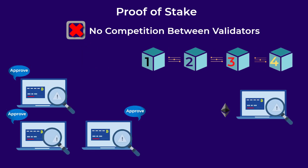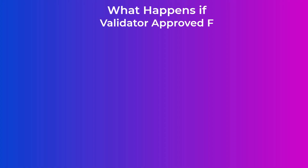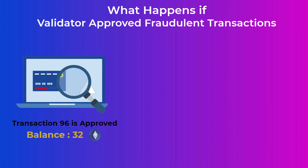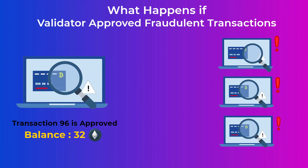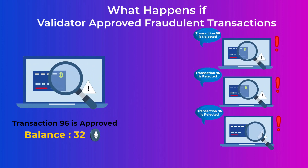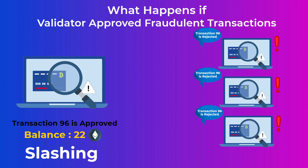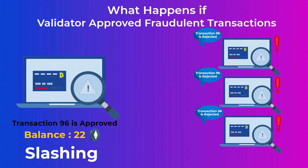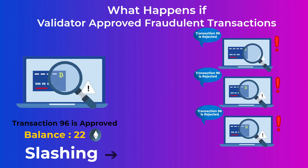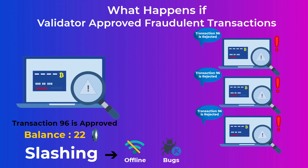We will get to how the network chooses the validator in a minute. But first, what happens if the validator approved fraudulent transactions to try to send himself some coins? While the other validators on the network will review his block of transactions, if any fraudulent transactions are detected, he will lose some or all of his staked crypto. This is called slashing. The validator can also lose his staked crypto if he didn't set up his node or computer correctly, if his node goes offline for a while, or even if he had a bug or a software crash.